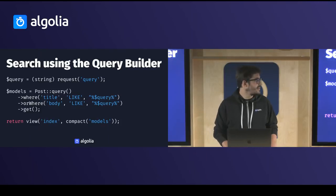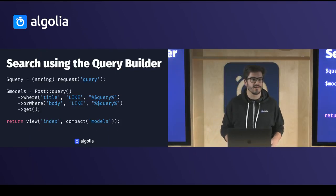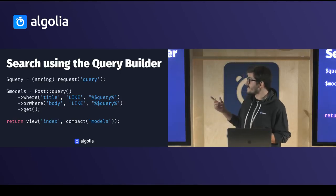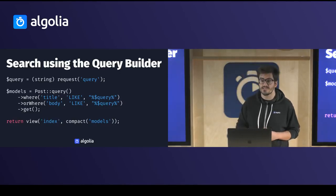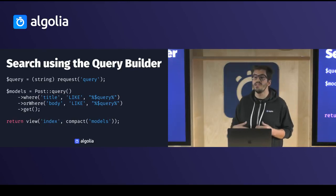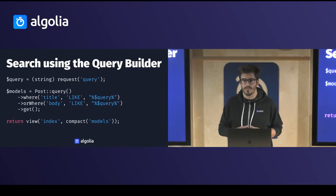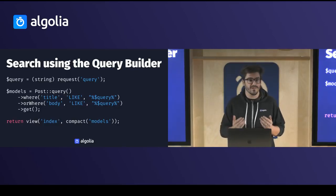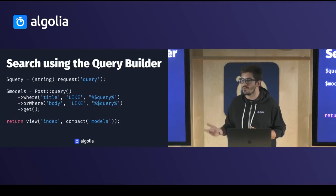Typically, this is the way of doing search using Laravel. What you do is you take the query out of the request, you send that query into the query builder where you perform some join conditions, some where conditions, and then you get models out of it and you send those models into the view.